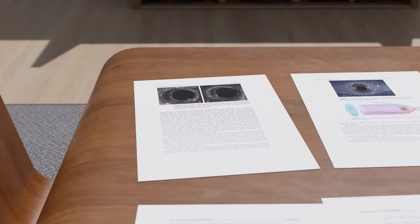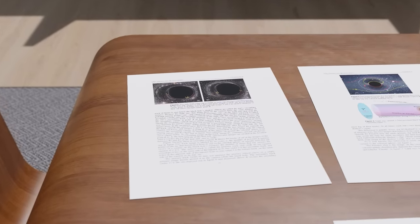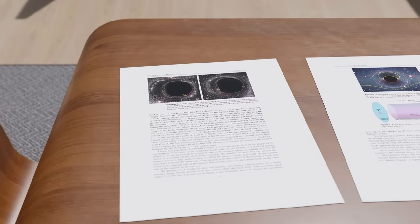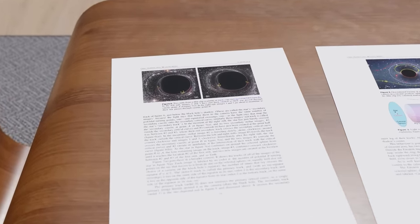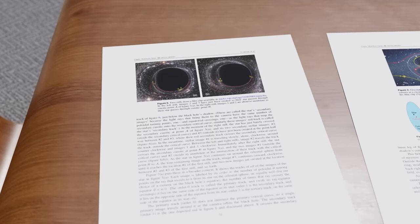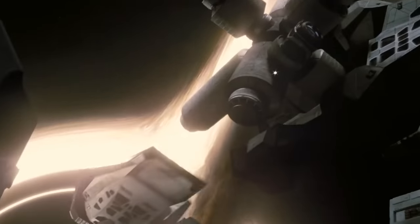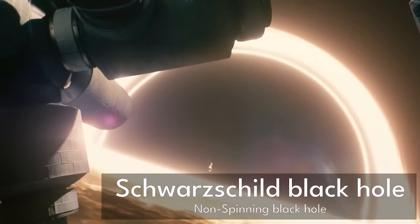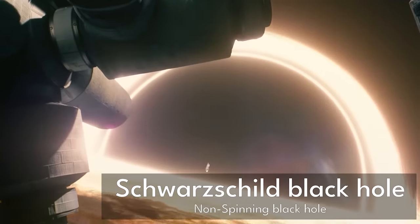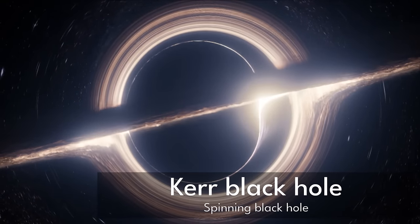However, Gargantua also had to be spinning obscenely fast, almost as fast as the theoretical maximum spin of a black hole, which is about the speed of light. So while the black hole in the movie looks like a non-spinning black hole, also known as a Schwarzschild black hole, it should have looked more like a spinning black hole, which is known as a Kerr black hole.